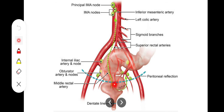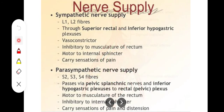The lower one-third of the rectum drains into lymph nodes along the middle rectal artery and then into the internal iliac nodes. The inferior-most part of the rectum drains into the superficial inguinal lymph nodes at the anal junction. So in summary, there are three main groups: superior rectal nodes for the upper two-thirds, middle rectal nodes for the lower one-third, and superficial inguinal nodes for the inferior-most region.